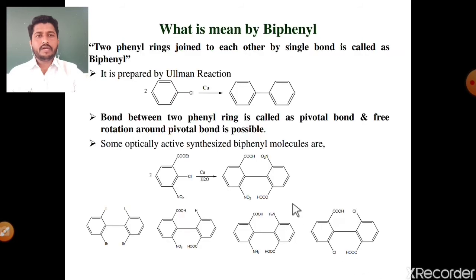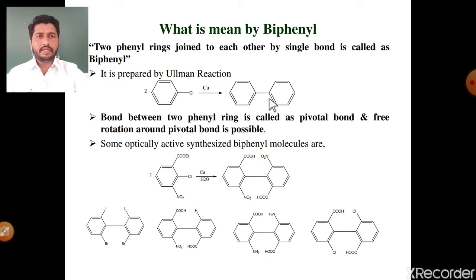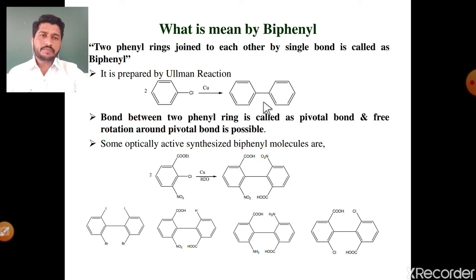Number first: what is meant by biphenyl molecule? Simply, two phenyl rings joined to each other by a single bond is called a biphenyl molecule. These two benzene rings are joined by a carbon-carbon single bond, and this single bond is called the pivotal bond. 360-degree rotation around this pivotal bond is possible, and due to this free rotation, biphenyl molecule shows optical activity.